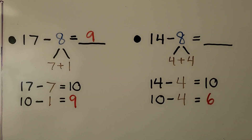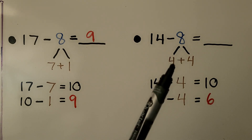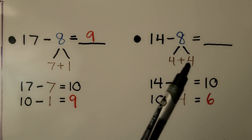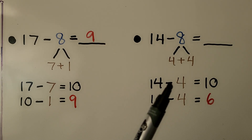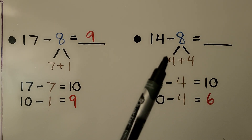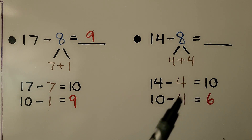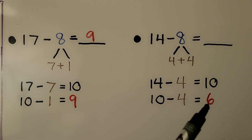Here we have 14 minus 8. We need to take 4 away from the 14 in order for it to be a 10. That means one of the addends that makes the subtrahend needs to be a 4, and 4 plus 4 equals 8. We do 14 minus that first 4 to get the 10. Now we have to take away this other 4: 10 minus 4 is equal to 6.